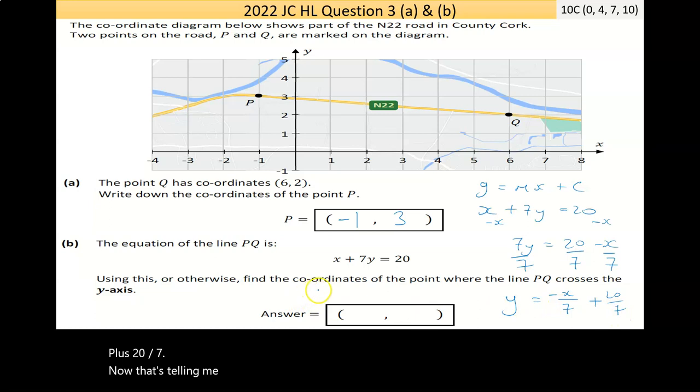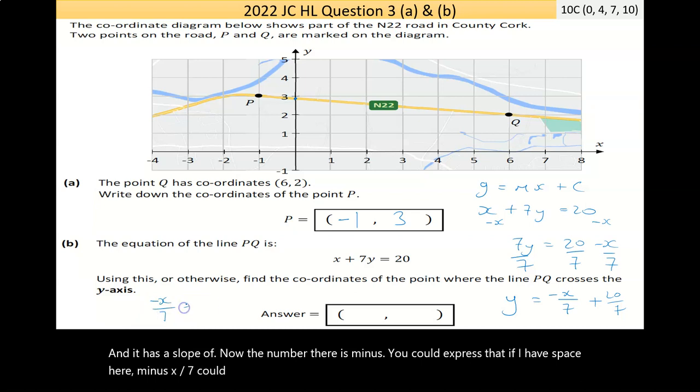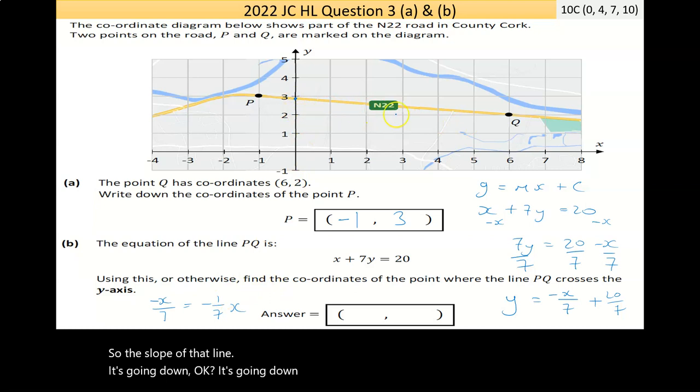I'm going to divide by 7. If I do it once, I have to do it to everything. Y is equal to minus X over 7 plus 20 over 7. That's telling me on this equation of line PQ, it's crossing at 20 over 7, roughly here. And it has a slope of minus 1 over 7.